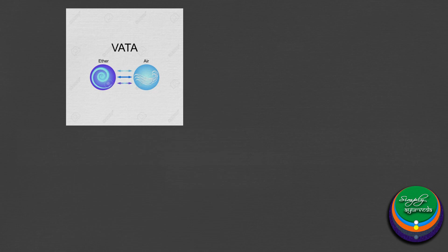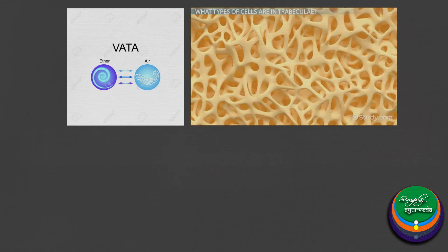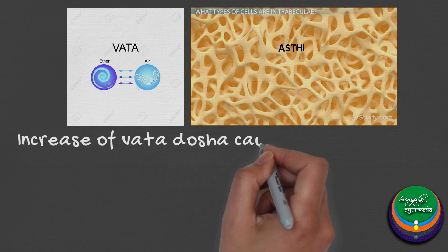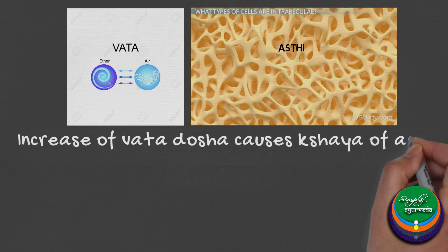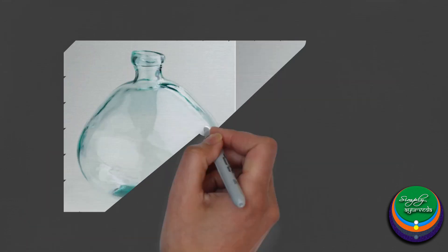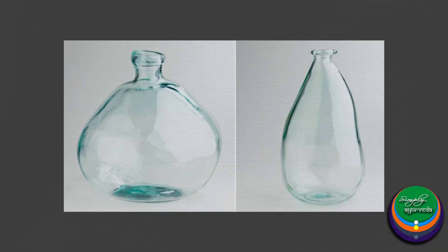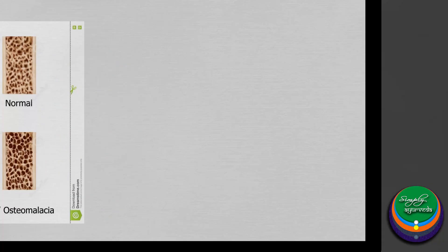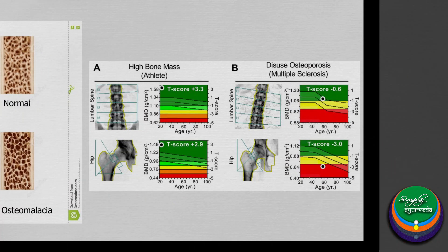Vata dosha has its abode in Asthi dhatu. They are inversely related, wherein when Vata dosha increases, Asthi undergoes reduction and vice versa. This negative relationship can be understood as in the case of a container and its cavity: when the cavity increases, the wall of the container thins down and becomes fragile, and when the wall thickens, the cavity inside it reduces.